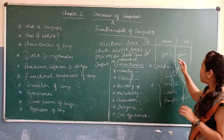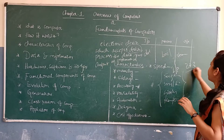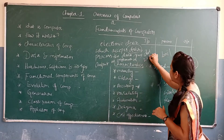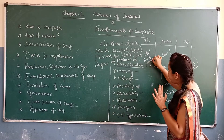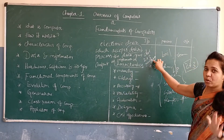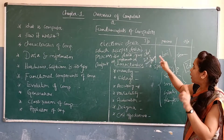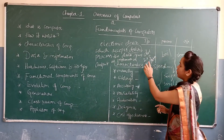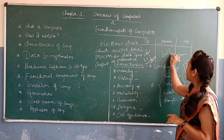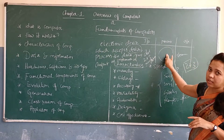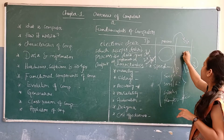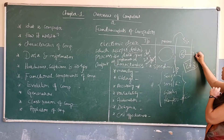For example, consider 2 plus 3. This is just the data — it is unprocessed. We are only giving the raw data: 2 plus 3. What is the output of this? After processing — that is, adding them — the output is 5. So 2 plus 3 is the data, the processing is the addition, and the output, which is 5, is the information.